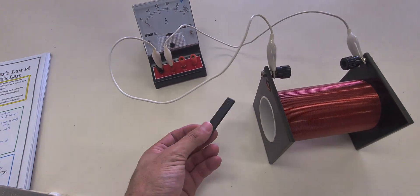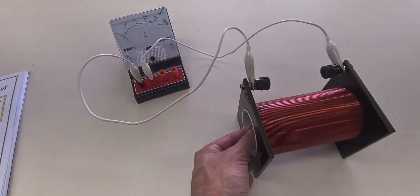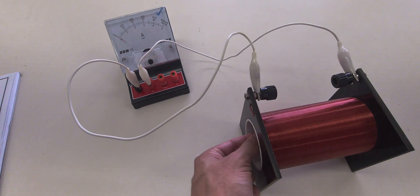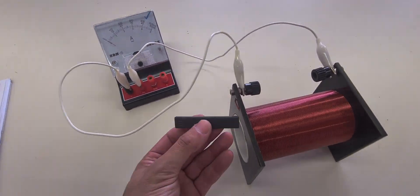If I change polarity of the magnet, so now I've got south going into the coil, the solenoid, you'll notice the needle being deflected the other way. And that's to do with the polarity of the magnet itself.